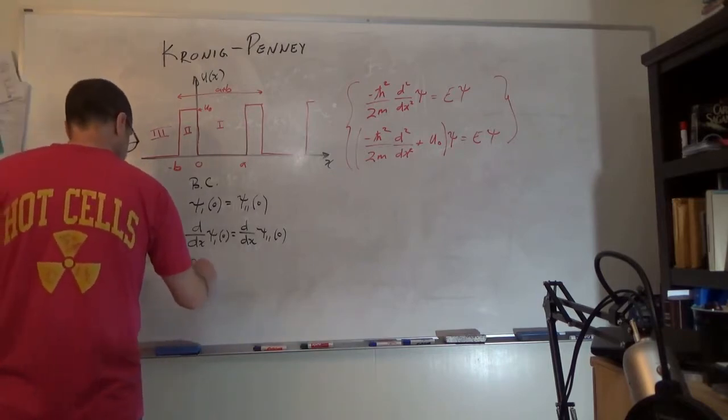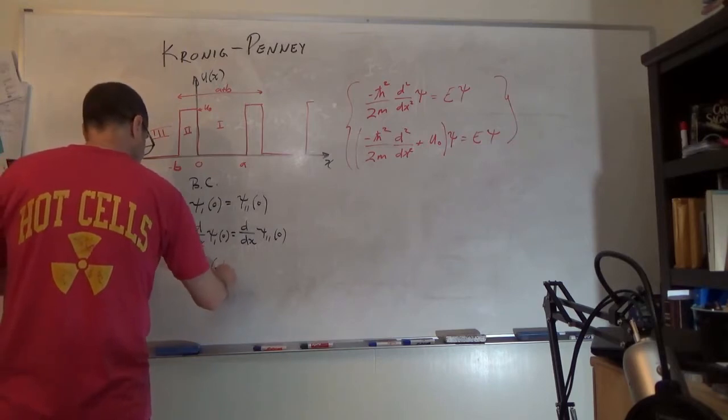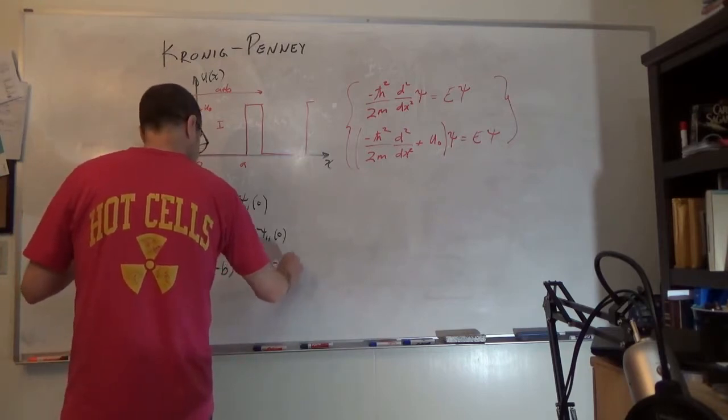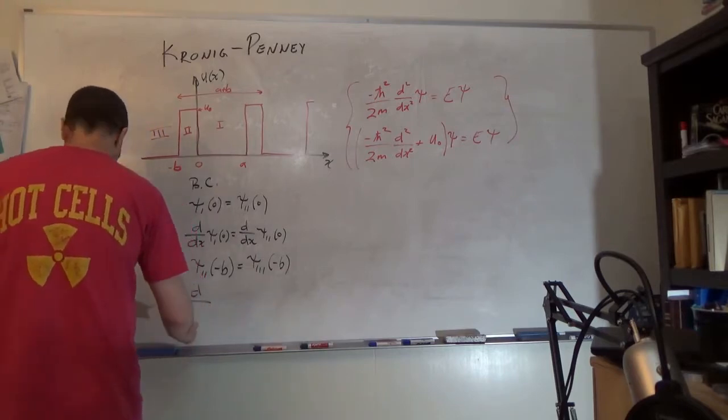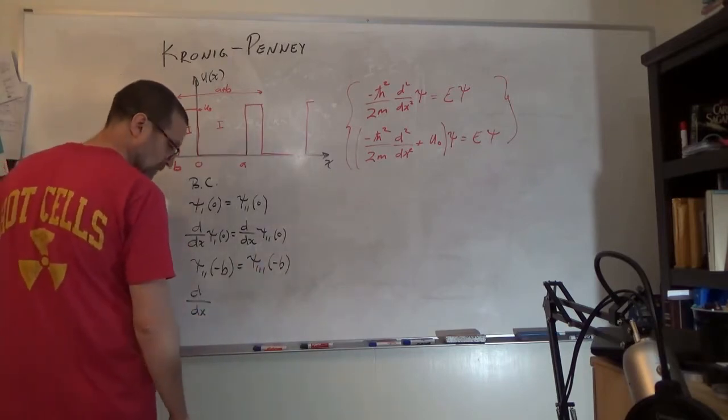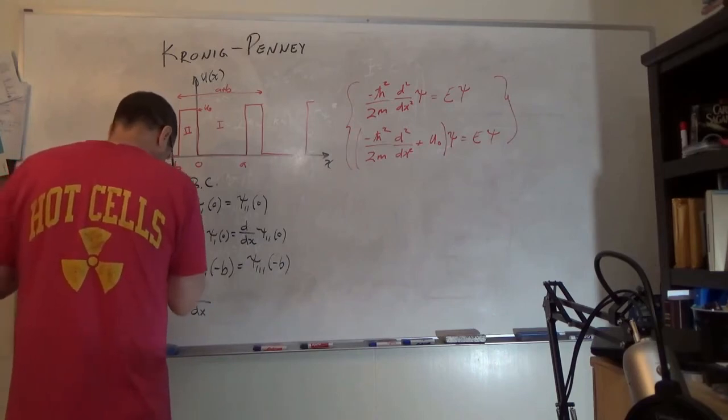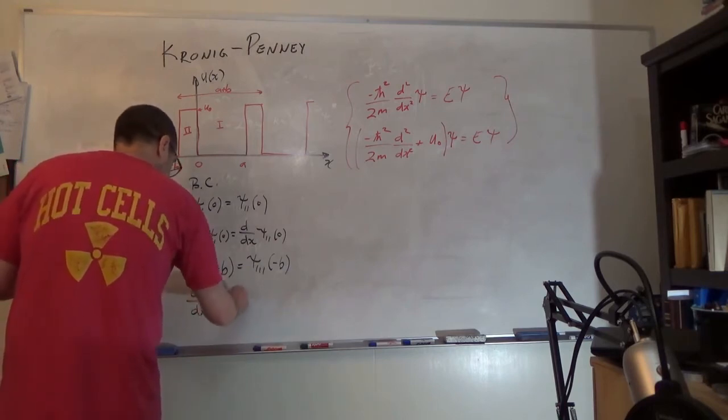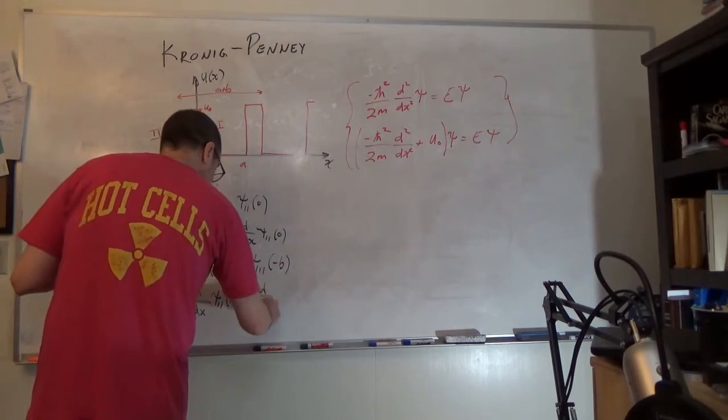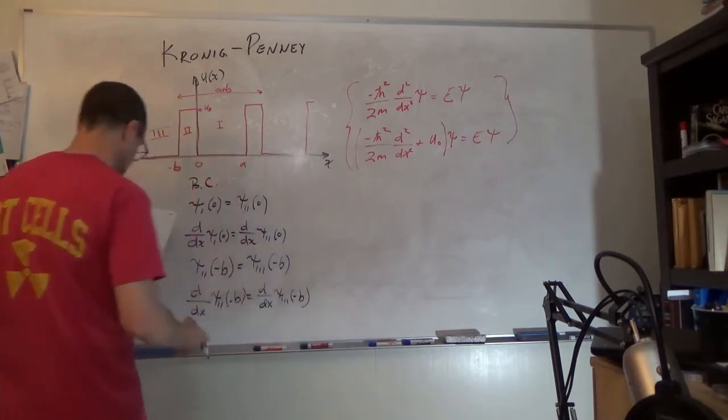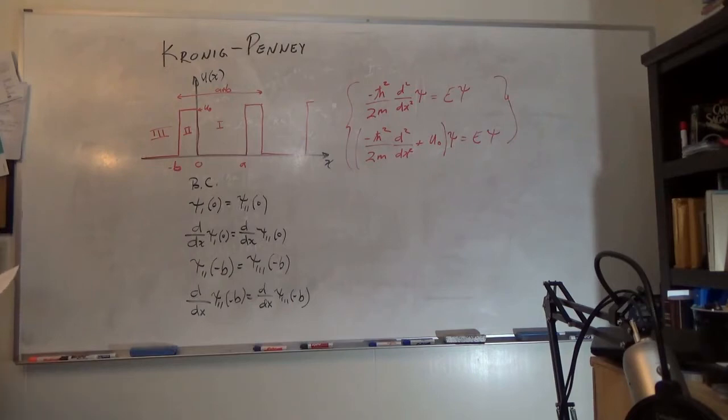And then the other boundary is going to be leaving region 2. We only need to express it once because of the periodicity. That is the continuity: psi 2 at minus b is equal to psi in region 3 at minus b. And continuous derivatives d by dx psi 2 at negative b is equal to d by dx psi region 3 at negative b. This keeps the wave function continuous and smooth everywhere.